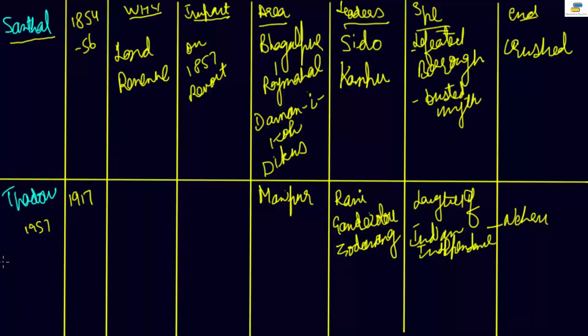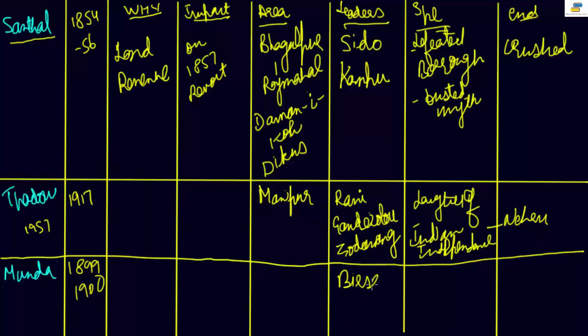Next, Munda uprising. This is a very important movement. Munda uprising was in the years 1899 to 1900. The leader was Bursa Munda. The area was in Bihar.